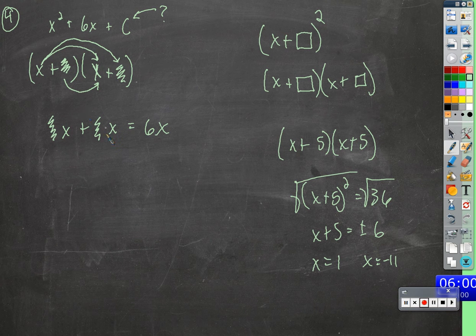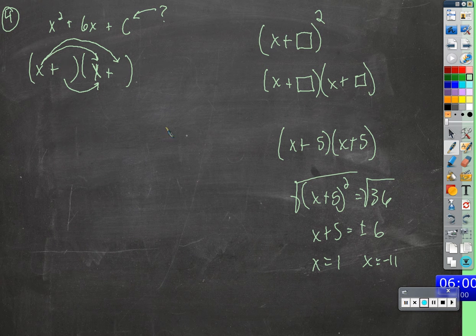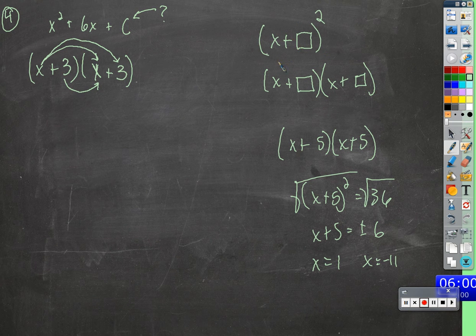If these two are identical and we add them together and get 6, then this must be half of 6. Those two numbers, which are identical to each other, must be 3 — it must be half of 6. It's the only way that we can meet all these conditions: that they would be identical so that we can write it as the quantity squared, and that when we multiply it out we get 6x.